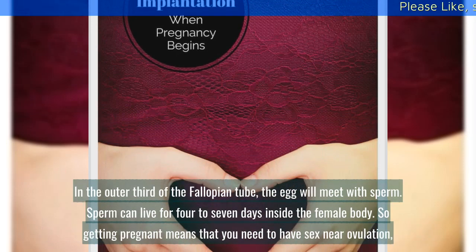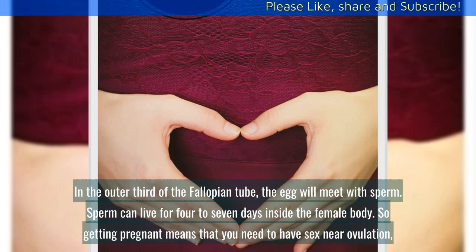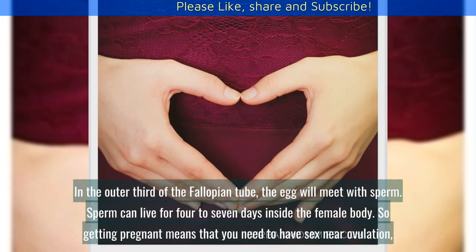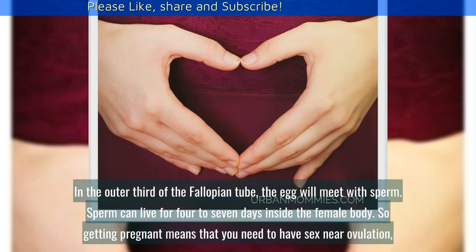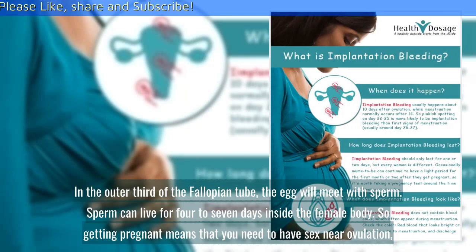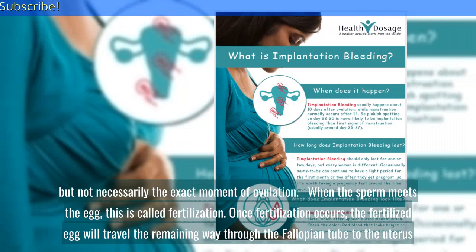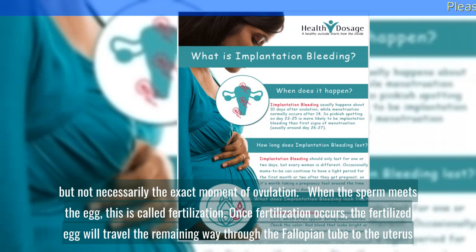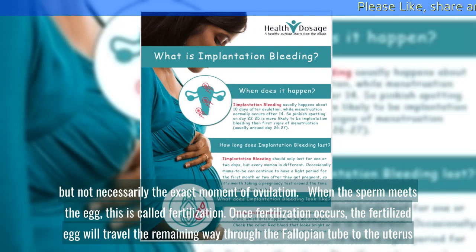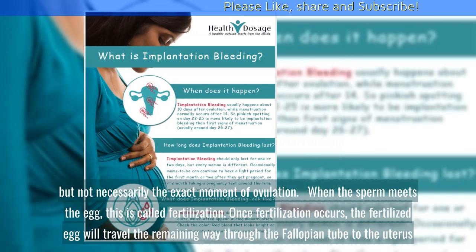In the outer third of the fallopian tube, the egg will meet with sperm. Sperm can live for 4 to 7 days inside the female body. So getting pregnant means that you need to have sex near ovulation, but not necessarily the exact moment of ovulation. When the sperm meets the egg, this is called fertilization.